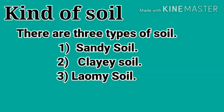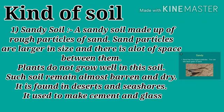Next, we will see the kinds of soil. There are three types of soil: sandy soil, clay soil, and loamy soil. Sandy soil is made up of rough particles of sand. Sand particles are larger in size and there is a lot of space between them, so plants do not grow well in this soil. Sandy soil remains loose and dry, and it is found in deserts and seashores. It is used to make cement and glass.